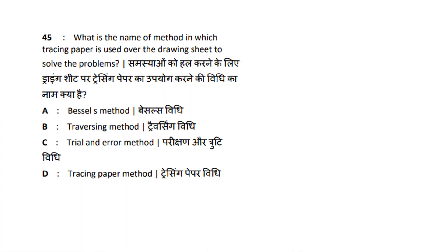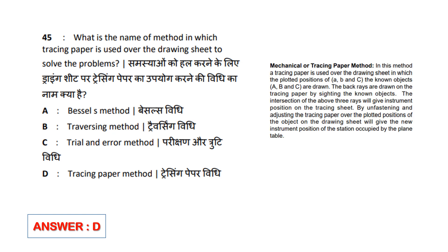What is the name of the method in which tracing paper is used over the drawing sheet to solve the problems? Options: Basel Method, Traversing Method, Triangular Method, Tracing Paper Method. Answer is option D — the Tracing Paper Method.